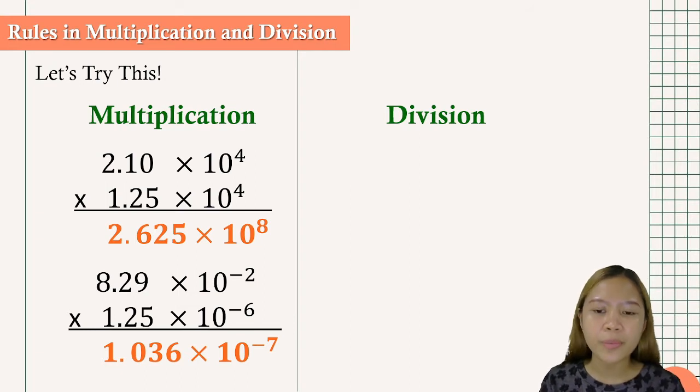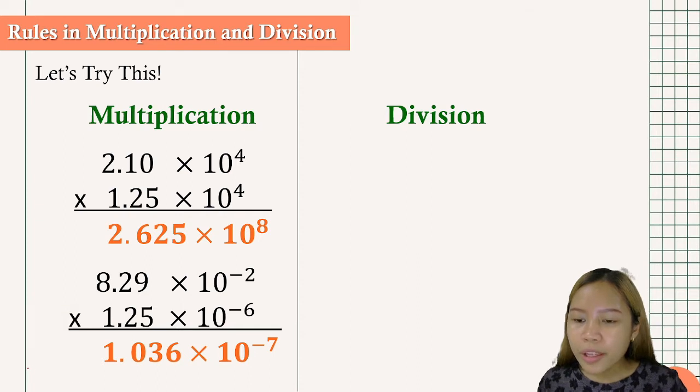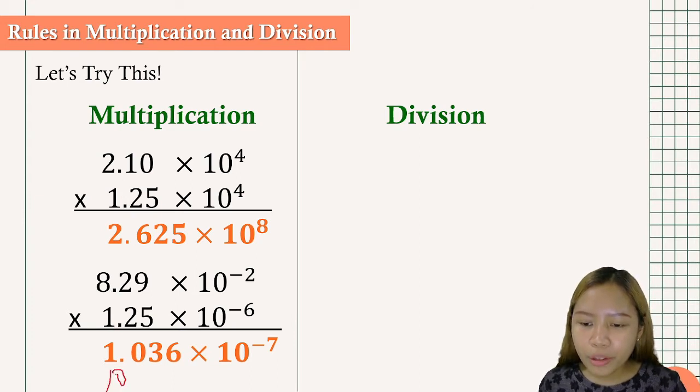The question here is, how did negative 2 plus negative 6 become negative 7? Shouldn't it be negative 8? Now originally, the product of 8.29 by 1.25 is 10.36.